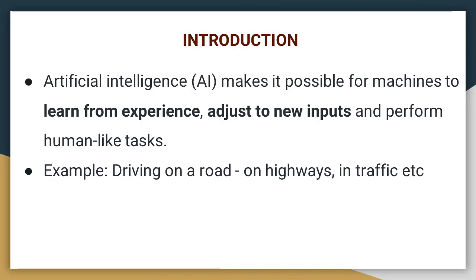Let me introduce you to this emerging area of artificial intelligence. One better way to understand artificial intelligence is through its potential. Artificial intelligence, denoted as AI, makes it possible for machines to learn from experience, adjust to new inputs and perform human-like tasks.